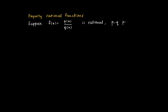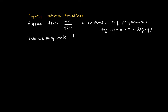This one is rational, and suppose that the degree of p is larger than the degree of the polynomial q. So in this case the degree of the numerator equals n, which is larger than m, the degree of the denominator.